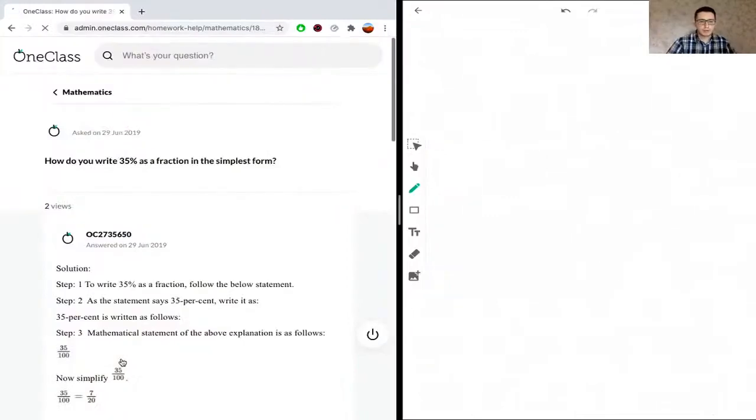The next question we have here is how do you write 35% as a fraction in simplest form. So 35% is the value that we're trying to write into a fraction, and we also need to simplify it down where there is no way to factor it.